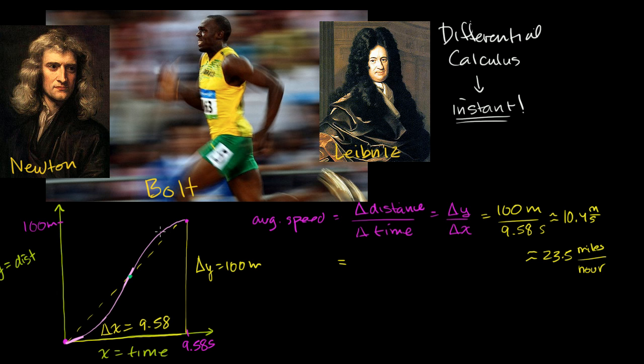I looked it up — Usain Bolt's instantaneous velocity, his peak instantaneous velocity, is actually closer to 30 miles per hour. So the average slope over the full race might be around 23 miles per hour, but his fastest point in the 9.58 seconds is closer to 30 miles per hour.